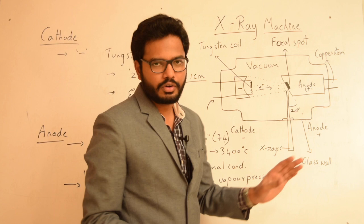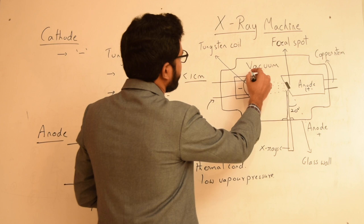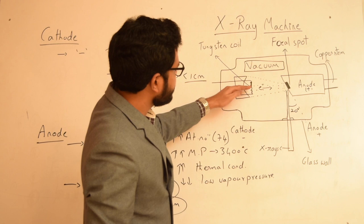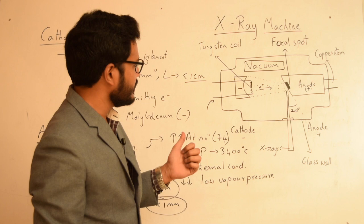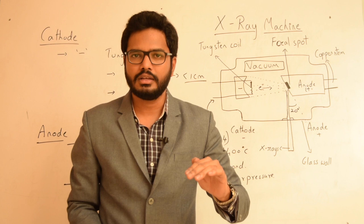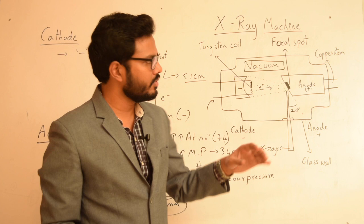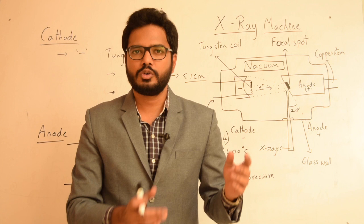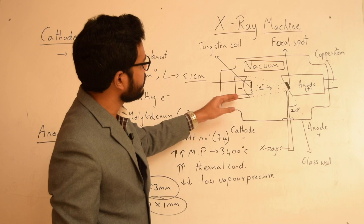The vacuum inside the glass enclosure is maintained to prevent collision of high-speed electrons with air molecules. Such collisions could decrease the speed of the electrons, leading to formation of low-energy x-ray photons. Additionally, the presence of air could cause burnout or oxidation of the filament, so maintaining vacuum prevents these issues.